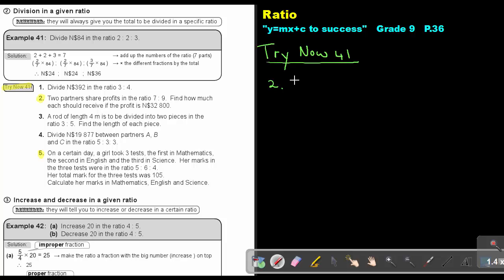So let's start by adding the ratio. So if we add the ratio 7 plus 9, that will give me 16. So let's call it partner 1. He's going to receive 7 of that 16. And we are going to multiply it with that 32,800. And that is going to give me an amount of 14,350.